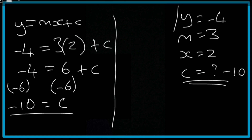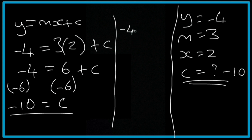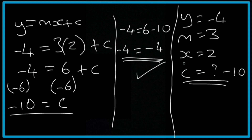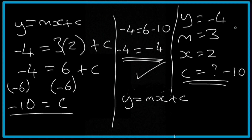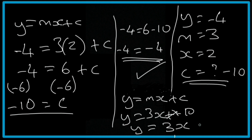To check whether that's correct, substitute c back into the whole equation: -4 = 6 + (-10), which is -4 = 6 - 10 = -4. That balances, so it's correct. Now that we've found all our values we can write the equation: y = mx + c gives us y = 3x + (-10), which simplifies to y = 3x - 10. That's the equation we were looking for.